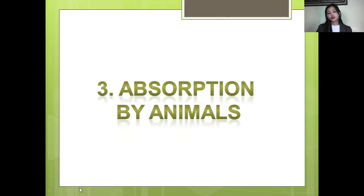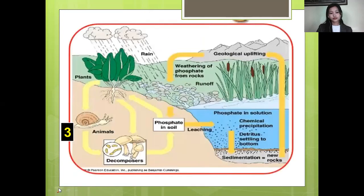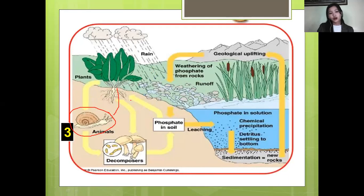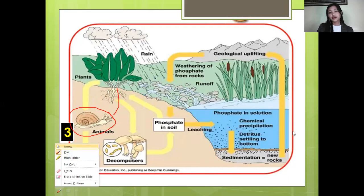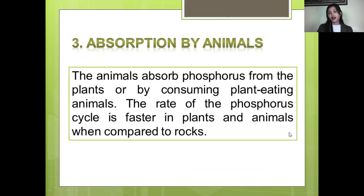The third part is the absorption by animals. Animals absorb phosphorus from plants or by consuming plant-eating animals. For example, snails eat plants, which is how absorption by animals occurs. The phosphate goes from the rocks to the plants, and then animals eat the plants. The rate of the phosphorus cycle is faster in plants and animals when compared to rocks.